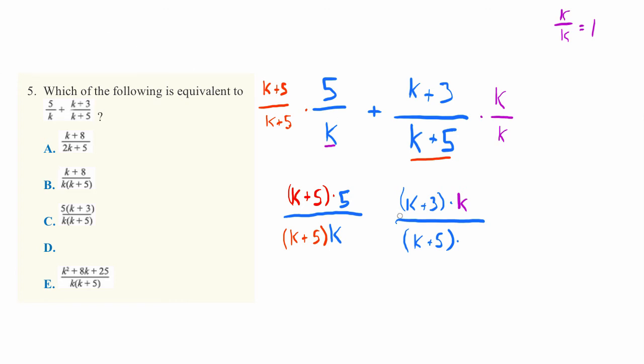And now an awesome thing has happened. Without changing this equation at all, because we just multiplied each side by 1, we've given it the same denominator. Which means we can add these two quantities together, no problem, because this denominator right here is the same as this denominator right here. So let's go ahead and do that addition.